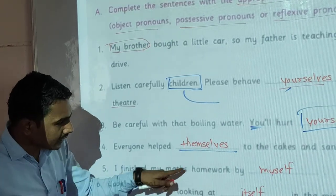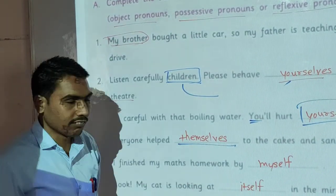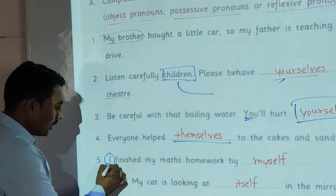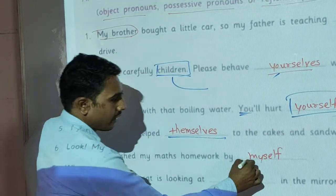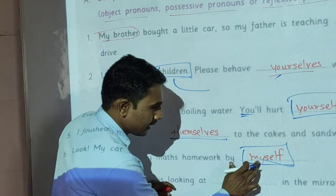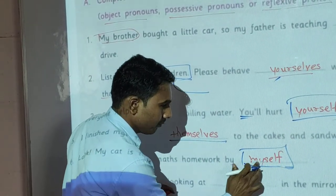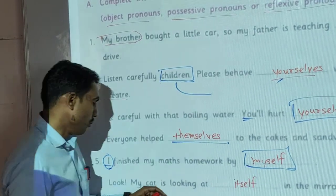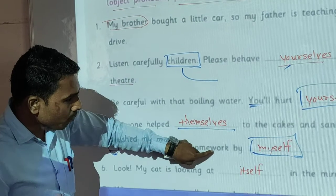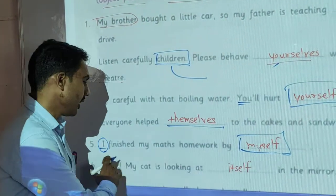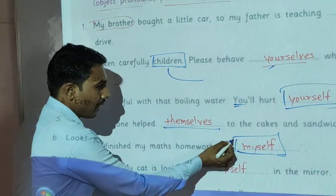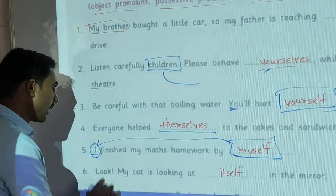I finish my maths homework by myself. Here 'I' is the subject. According to this sentence, we use the reflexive pronoun 'myself'. This 'myself' is used for the subject 'I'.